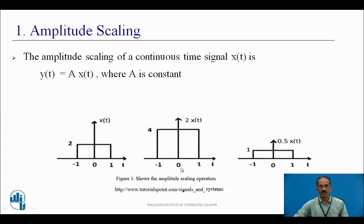But time is not going to change; time remains the same, that is −1 to +1. The amplitude will be doubled, which equals 4. Similarly, if I want to get 0.5x(t), here a = 0.5. Again from t = −1 to +1, the amplitude will get half of it. The initial amplitude of x(t) is 2, then it becomes 1.